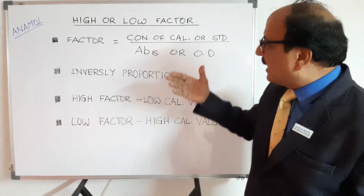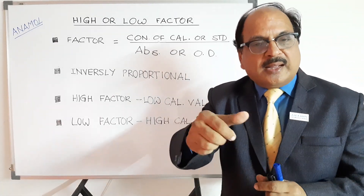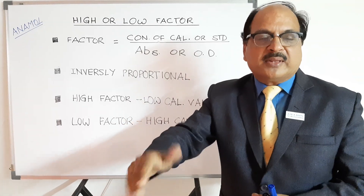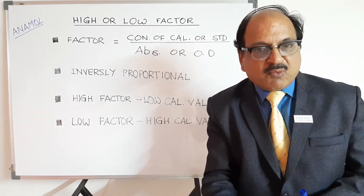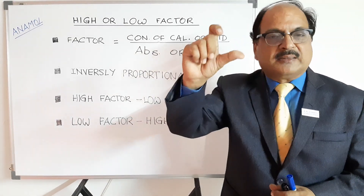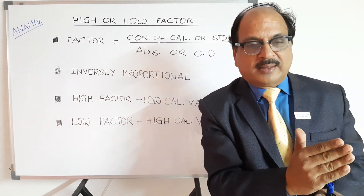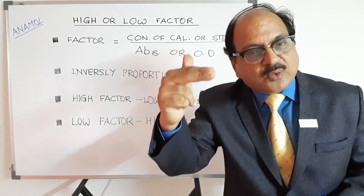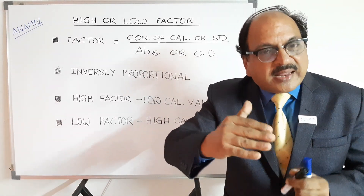Now let's take another example — a calibrator which is a synthetic standard. Over a period of time, when you are using the standard vial every day, opening it in the morning and using it, then capping it and keeping it in the refrigerator in the evening, and again opening it the next morning — this happens for 3 to 4 months. The evaporation of the liquid which has occurred in the standard vial results in the concentration of the calibrator increasing. This results in a higher absorbance, hence a lower factor — meaning your answers will start becoming lower and lower. By contamination of reagent into the standard, you can decrease the value of the standard, or by exposing the calibrator you can increase the concentration by evaporation.